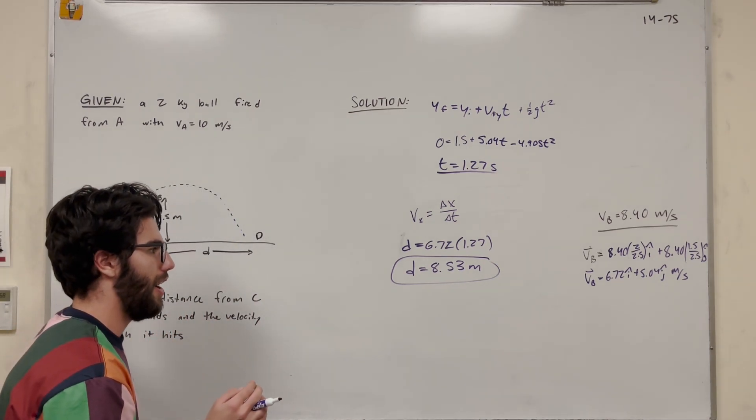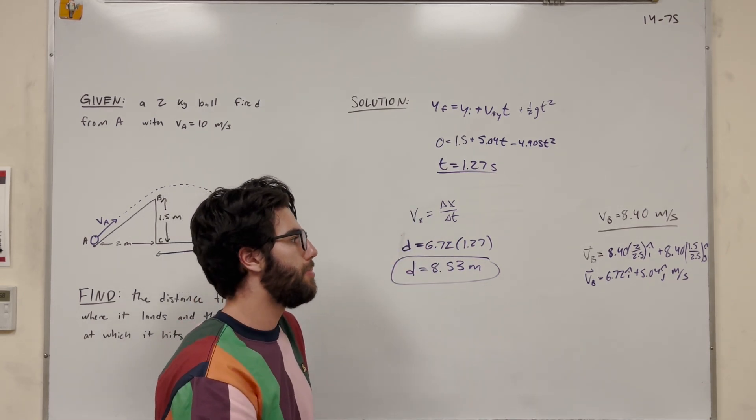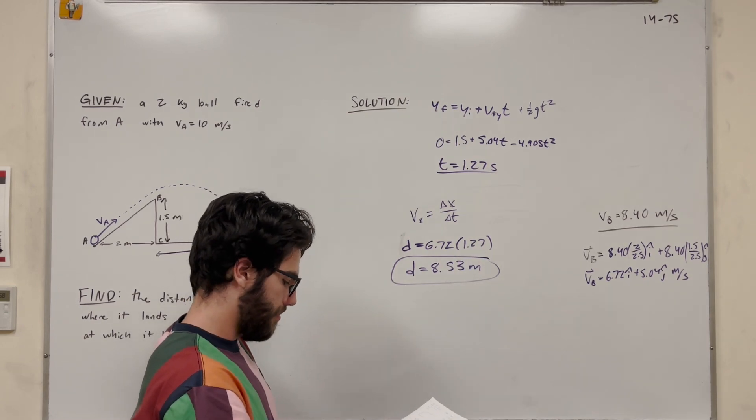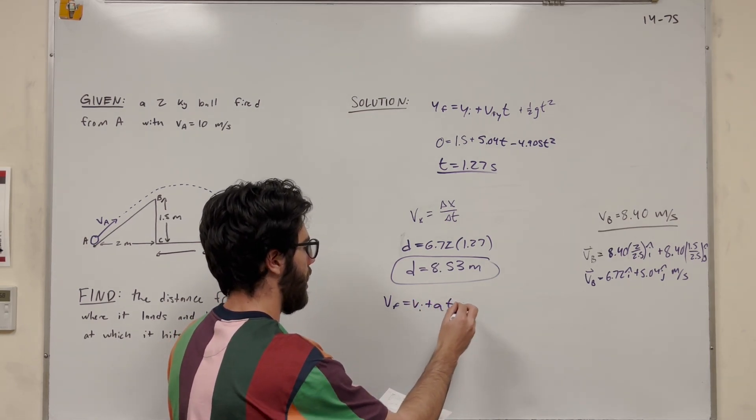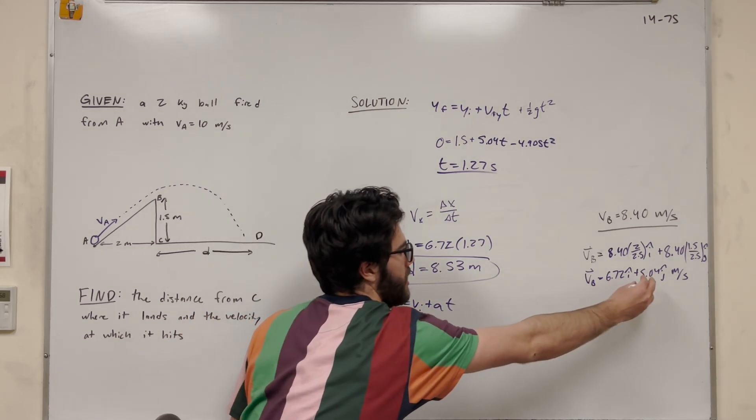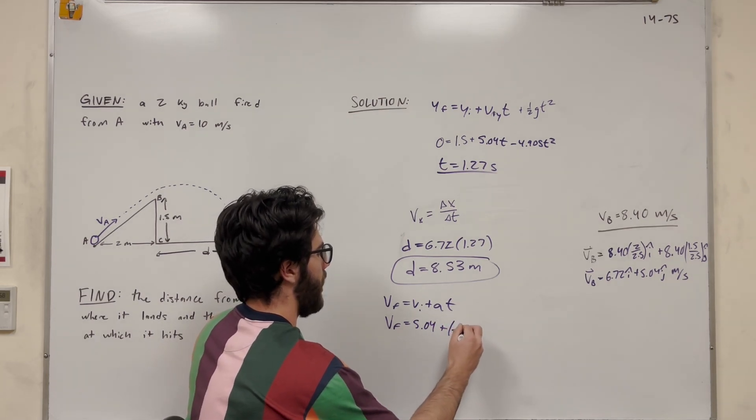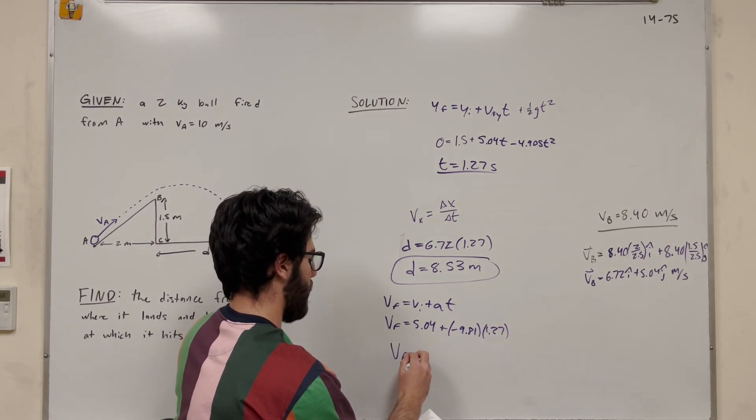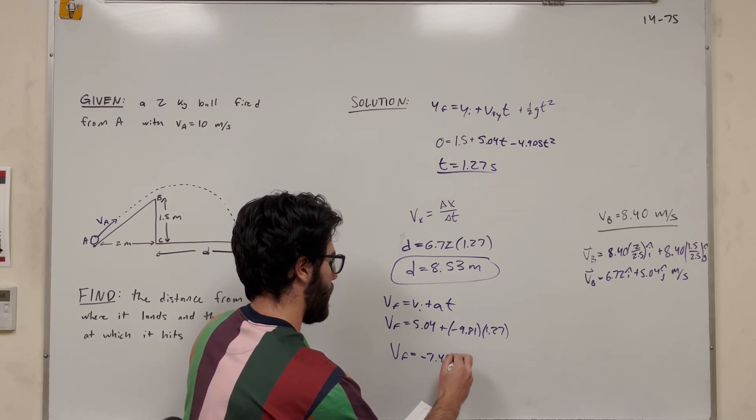So now we just need to find the velocity in which it hits the ground. The x component is going to stay the same because there's no acceleration when it's in the air acting on the x component. So all we need to do is figure out the velocity in the y direction when it lands. So we can use the kinematics equation velocity final is equal to velocity initial plus acceleration time. So we're solving for velocity final when it hits the ground. So we know velocity initial is 5.04 when it leaves. And we know acceleration is negative 9.81 and time is 1.27. So we get that velocity final is equal to negative 7.40 meters per second.